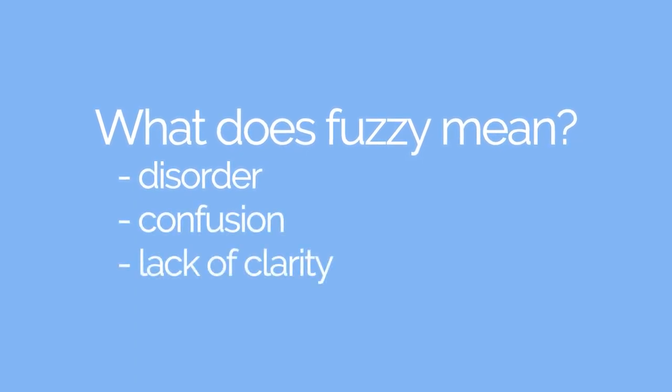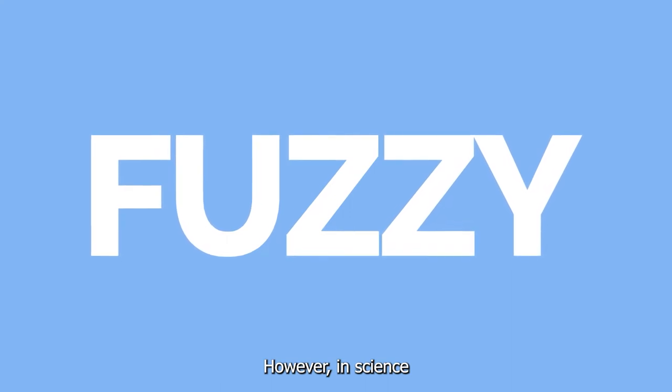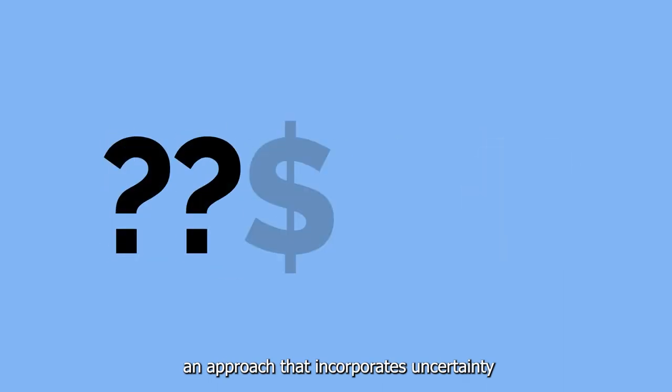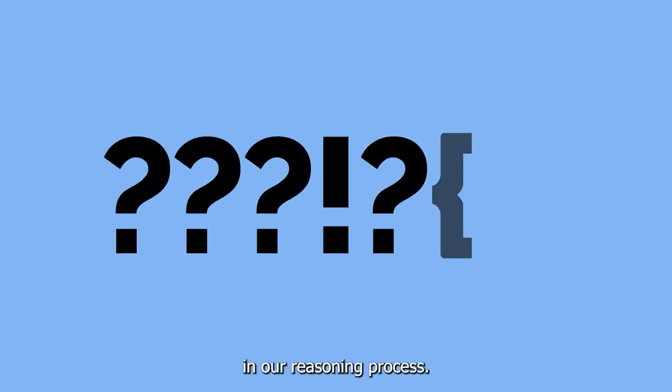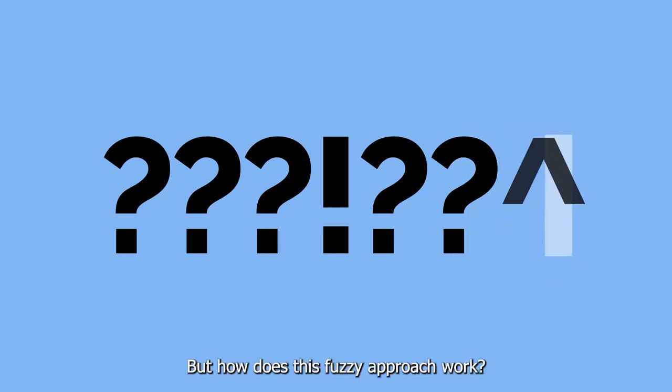When an image is blurred, out of focus, or unclear, we often say it's fuzzy. However, in science, the word fuzzy is used to describe an approach that incorporates uncertainty in our reasoning process. But how does this fuzzy approach work?